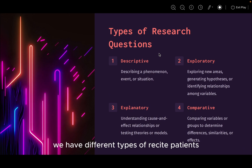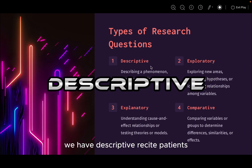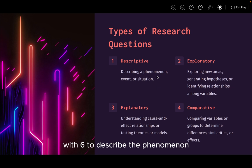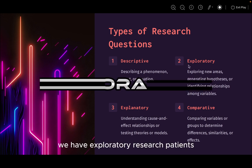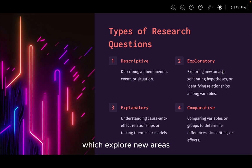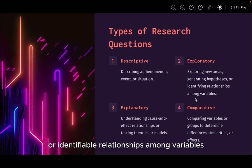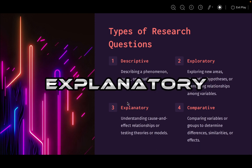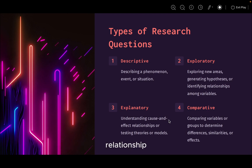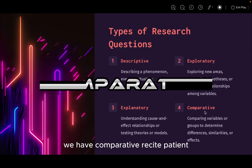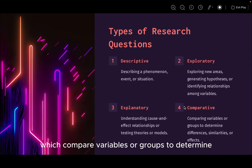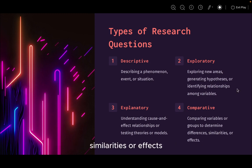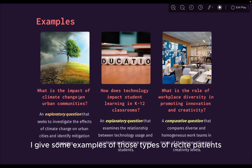We have different types of research questions. We have descriptive research questions, which seek to describe a phenomenon, event, or situation. We have exploratory research questions, which explore new areas, generate hypotheses, or identify relationships among variables. We have explanatory research questions, which seek to understand cause-and-effect relationships, or test theories or models. And finally, we have comparative research questions, which compare variables or groups to determine differences, similarities, or effects.